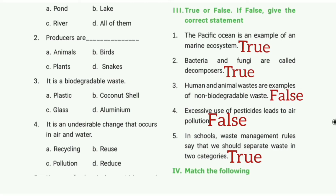True or false. 1st one: the specific ocean is an example of a marine ecosystem. The answer is true. 2nd one: bacteria and fungi are decomposers. The answer is true. 3rd one: human and animal wastes are examples of non-biodegradable waste. The answer is false.